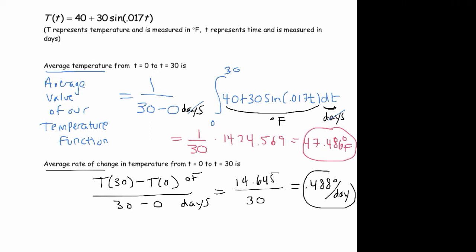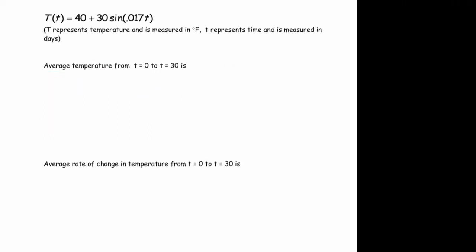So the average rate of change is 0.488 degrees per day. So on average, the temperature's going up by 0.488 degrees per day on this time interval.